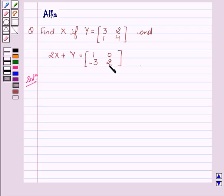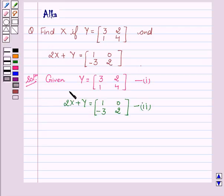Now let's start with the solution. We are given Y equals [3, 2, 1, 4] as our first equation and 2X plus Y equals [1, 0, minus 3, 2] as our second equation.